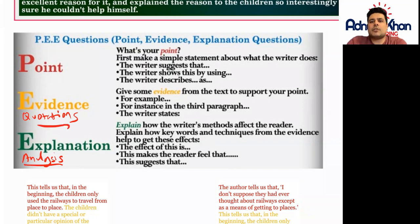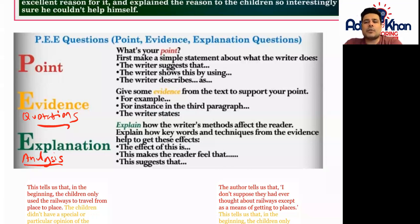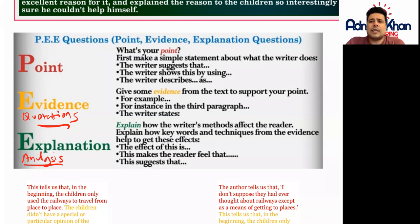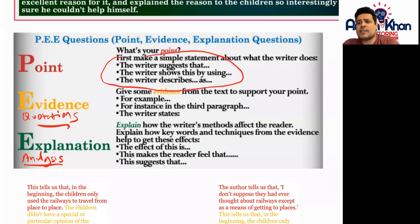In your Point, you always have to make a point first so the examiner knows what you're referring to. Make a simple statement about what the writer is doing or what is happening in the text. Some keywords you can use are: 'the writer suggests that...', 'the writer showed this by using...', and 'the writer describes this as...'.